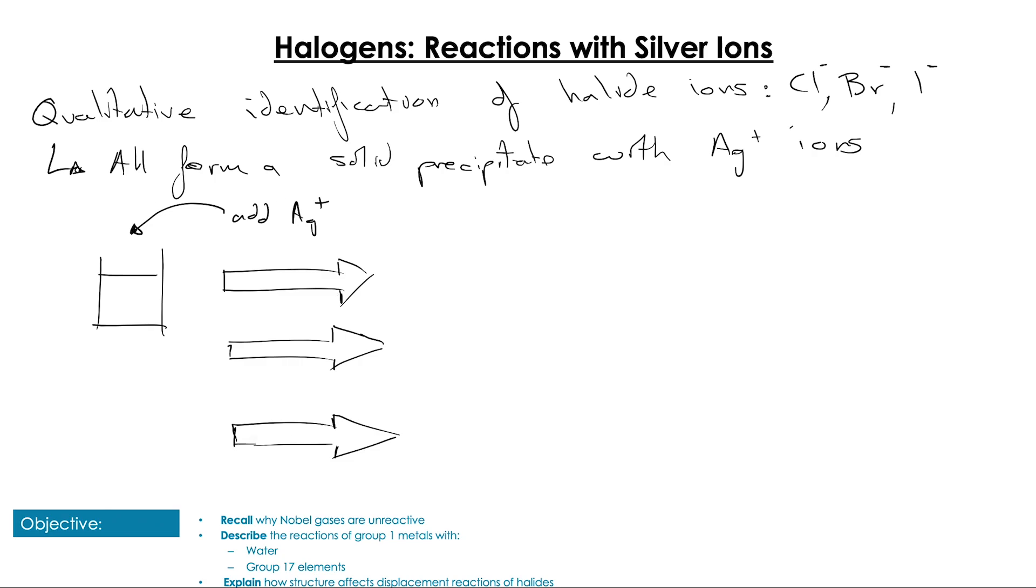If we add silver nitrate solution to a solution we suspect contains halogen ions, there are three outcomes. If we get a solid white precipitate, that is a sign of the presence of chloride ions, Cl- ions.